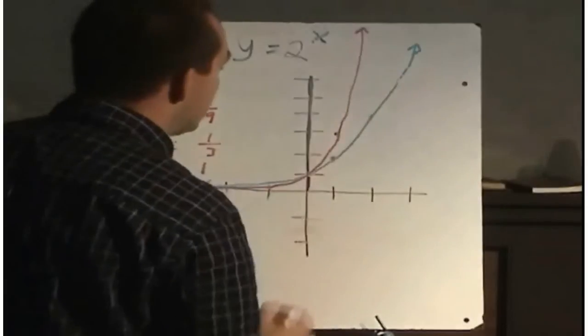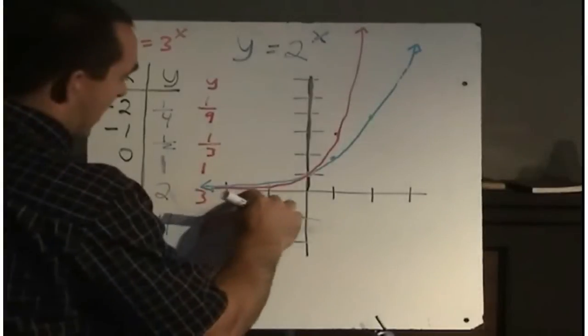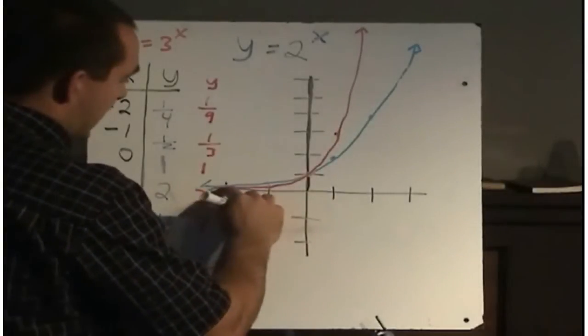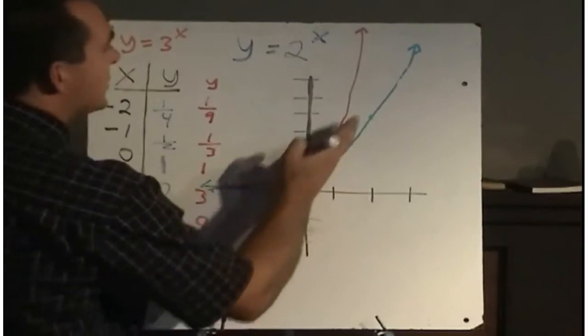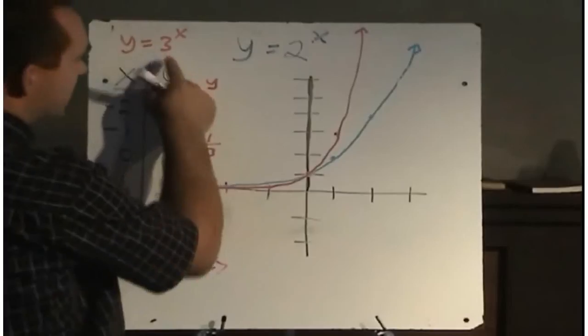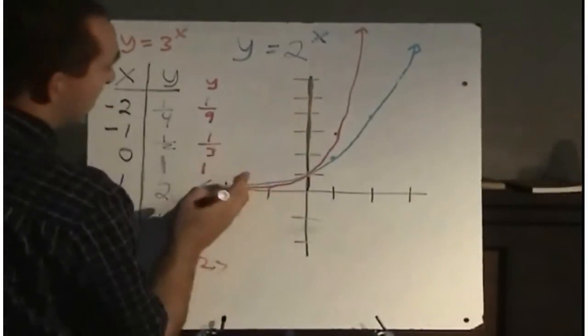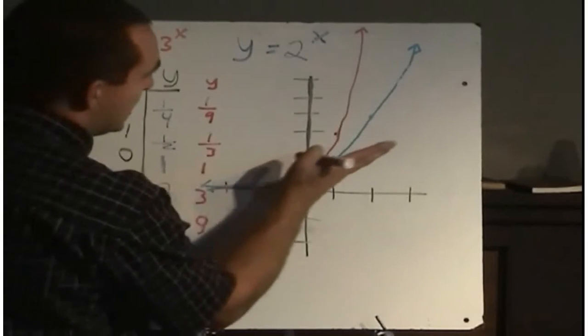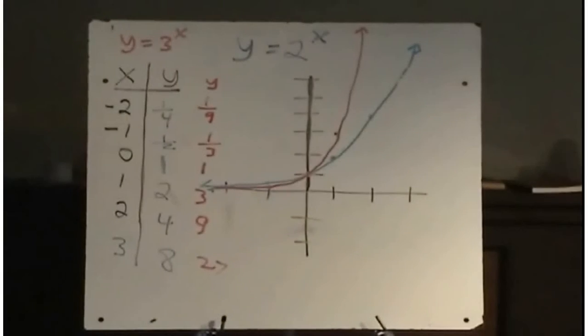So it still has the same basic shape. Same basic shape here. Comes along the x axis, goes to the point 0, 1, and then continues on up. And obviously the larger this base is going to be, the steeper your curve is going to get. And the smaller this number, the less steep your curve will be as we move to the right along the x axis.